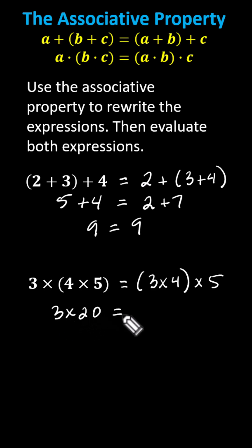On the right inside the parentheses we have 3 times 4 which is 12 giving us 12 times 5. Back on the left, 3 times 20 is 60. And on the right, 12 times 5 is also 60.